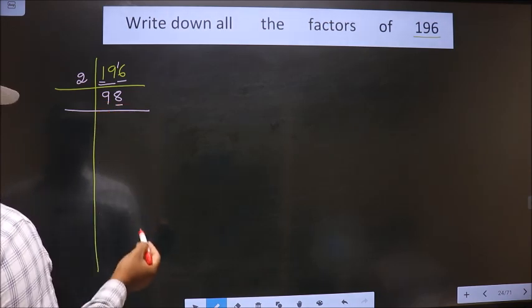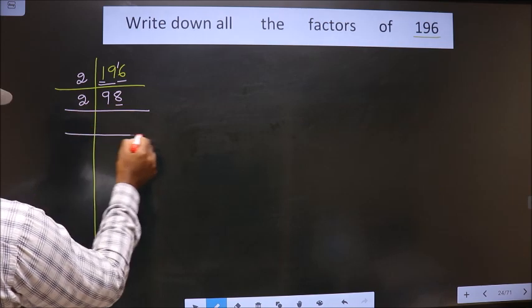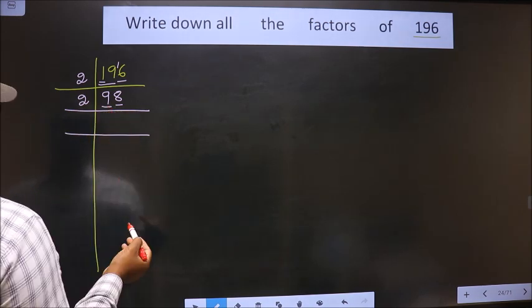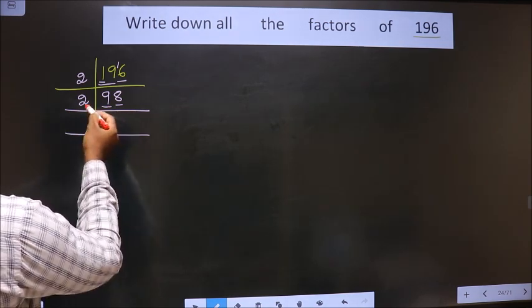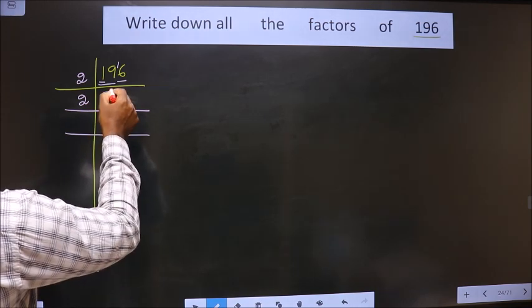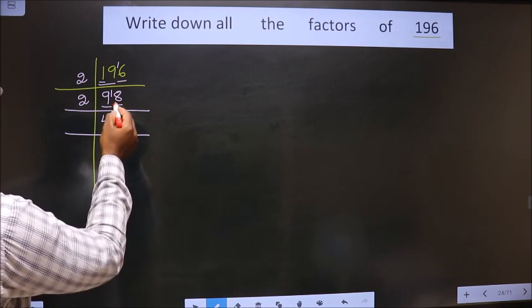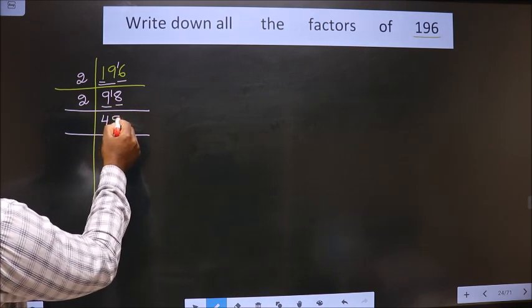Now for this number, last digit is 8 which is even so we take 2 here. First number is 9. A number close to 9 in 2 table is 2 fours, 8. 9 minus 8 is 1, 1 carried forward making it 18. When do we get 18 in 2 table? 2 nines, 18.